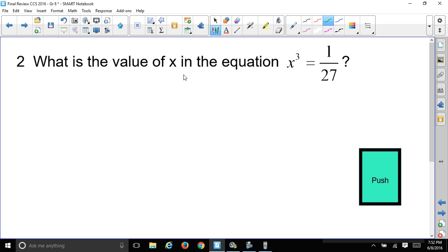Alright. What is the value of X in the equation X cubed equal 1 over 27? Well, let's write that down. X cubed equals 1 over 27. So, we're looking for the value of X. Well, the opposite of cubing would be cube rooting. So, I'm going to take the cube root of both sides. It's like a square root, but the index number is 3 on the outside. So, what that does, it cancels out the exponent here and leaves me with X.